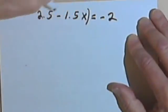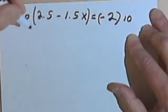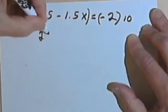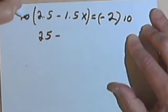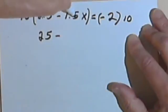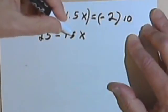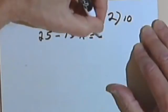In this case, I'm going to multiply the left side of the equation by 10, which means I have to multiply the right side of the equation by 10 also. Multiplying 10 times 2.5 is going to turn it into 25. So I've got 25 minus 15x equals negative 2 times 10 is negative 20.